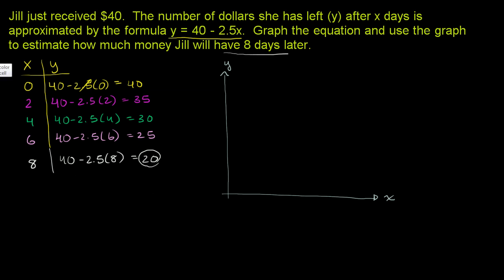She starts off at $40, so let me mark off the y-axis in increments of 10 first. This would be $10, this would be $20, this would be $30, this would be $40. And then I could do the $35, the $25, the $15, and the $5. And then let me mark off the days. This is after two days, four days, six days, eight days.